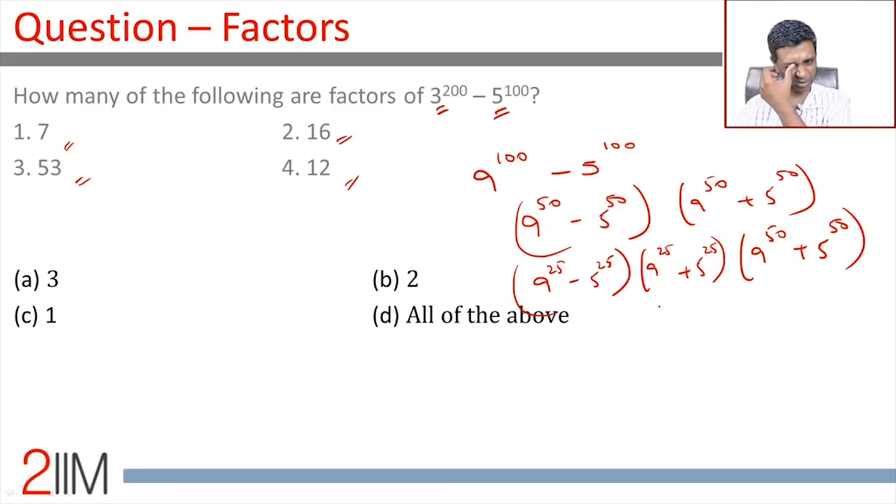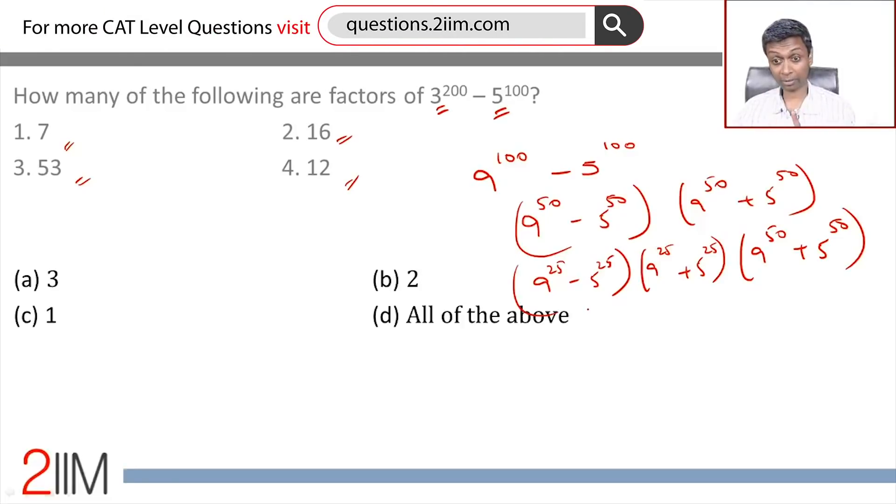Now this 9^25 - 5^25, this will definitely be a multiple of 4. This is the multiple of 9 - 5. 9^25 + 5^25, the form a^m + b^m, where m is odd. So this will be a multiple of 9 + 5, which is 14.